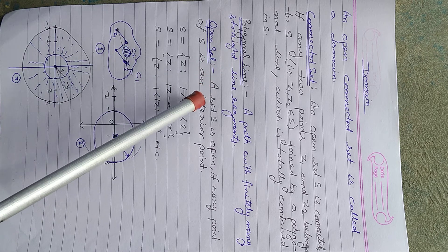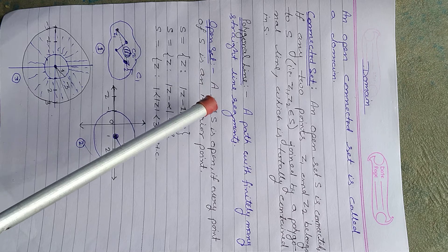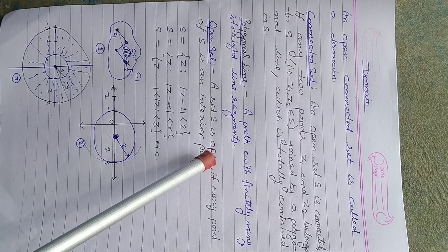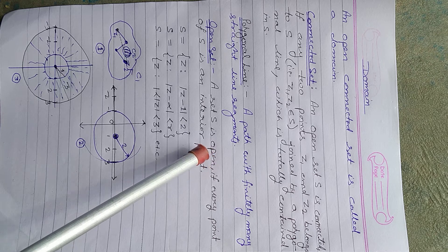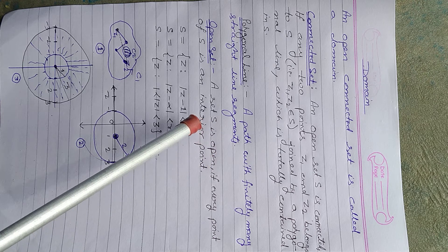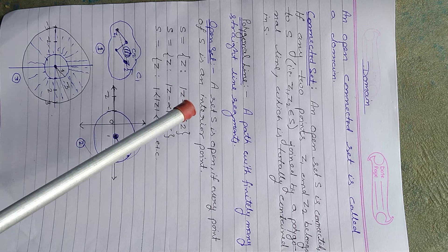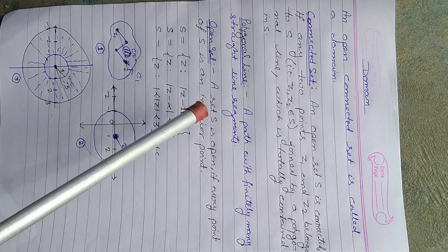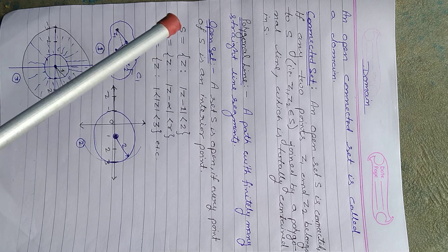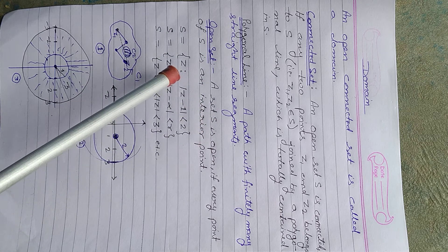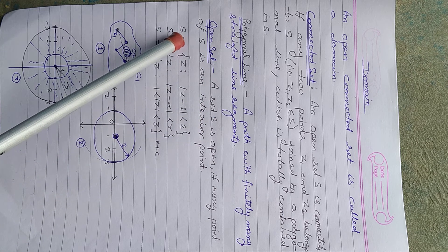The definition of an open set: a set S is an open set if every point of S is an interior point. This means all the points are inside the set — no boundary points are included in this set.